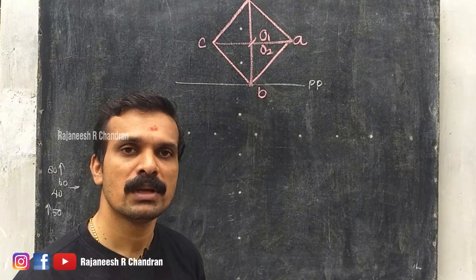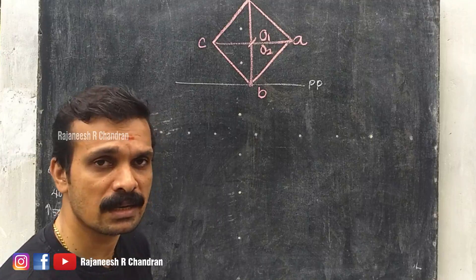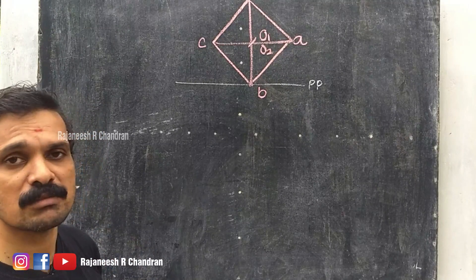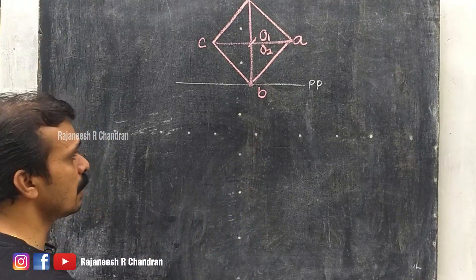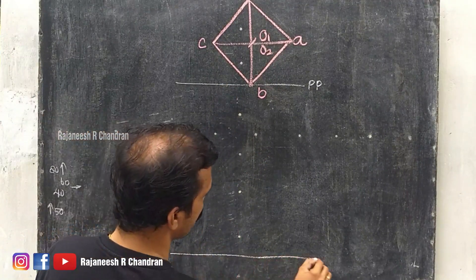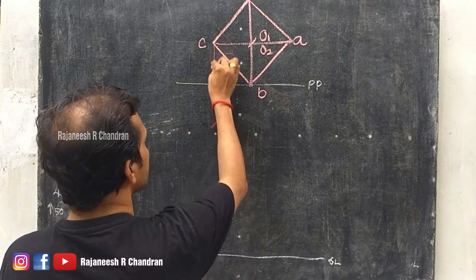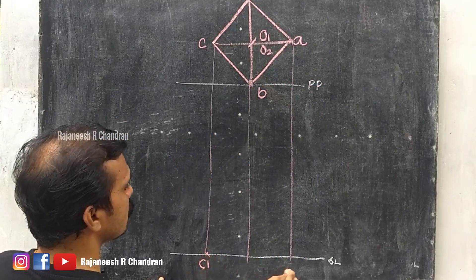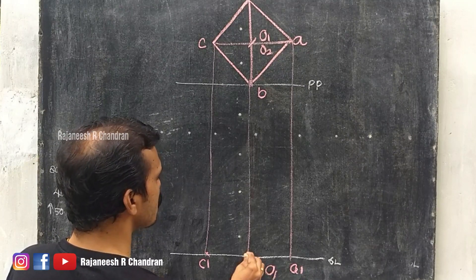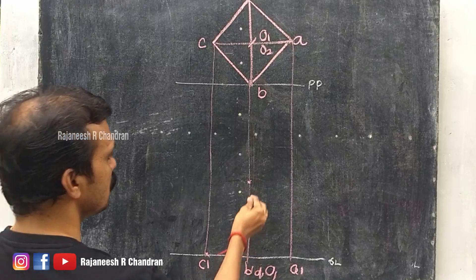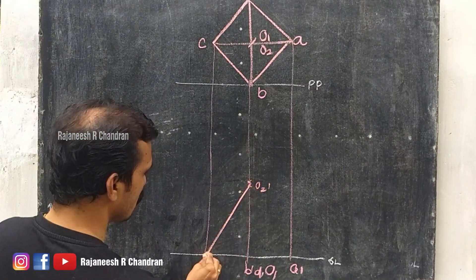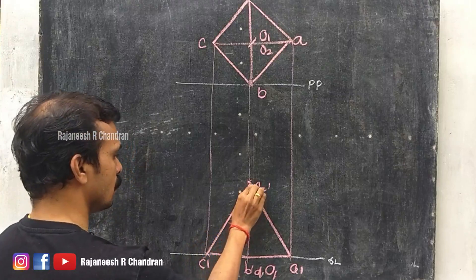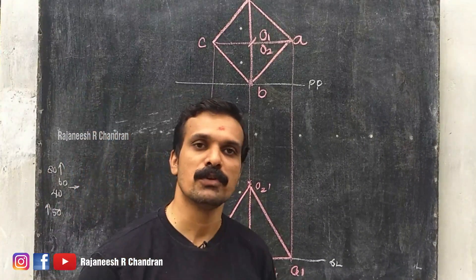In the front view, first we have to obtain the ground line. It is given that the station point is 80 above and 60 in front, so 80 plus 60 equals 140. At a distance of more than 140, draw the ground line, then project this. So that gives us C dash, A dash, B dash, D dash, and at a height of 50 you can obtain O2 dash, so that you can complete the front view of the square pyramid.